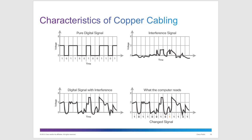With interference, your pure digital signal looks all nice and neat. The interference affects the line itself, and when you mix the two together, you get a corrupted signal. You're hoping you don't have so much interference that a one turns into a zero or a zero turns into a one — corrupting the data being sent. Running cable near power lines or fluorescent lighting will result in interference.